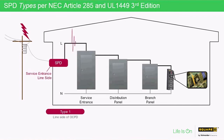Type 1 SPDs are permanently connected, hardwired, intended for installation between the secondary of the service transformer, which we see on the far left, and the line side of the main service equipment overcurrent protective device, as well as the load side of the main service equipment. Type 1s can be installed anywhere within the distribution system. Type 1 SPDs are available from Schneider Electric in many sizes, ratings, and mounting configurations.